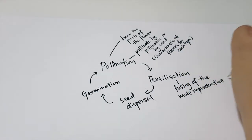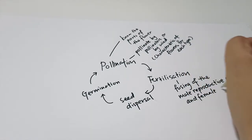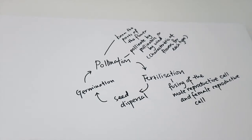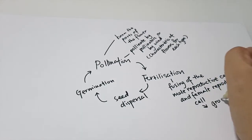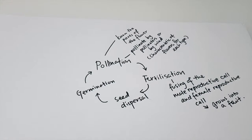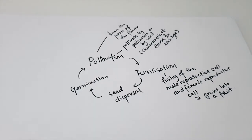Fertilization is the fusing of the male reproductive cell and the female reproductive cell. When that happens, the flower will turn into a fruit — the petals drop off, the ovary grows into a fruit, and the ovule becomes the seeds.